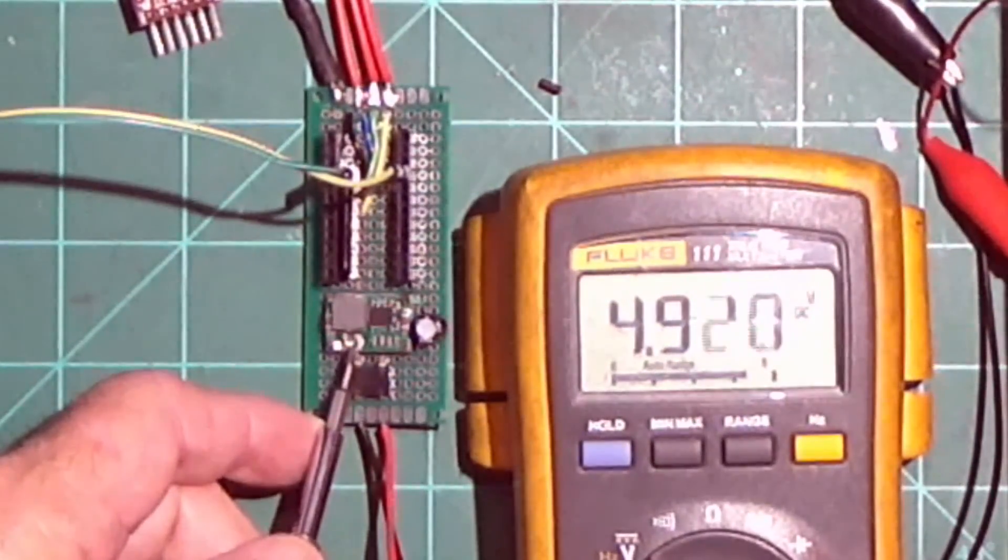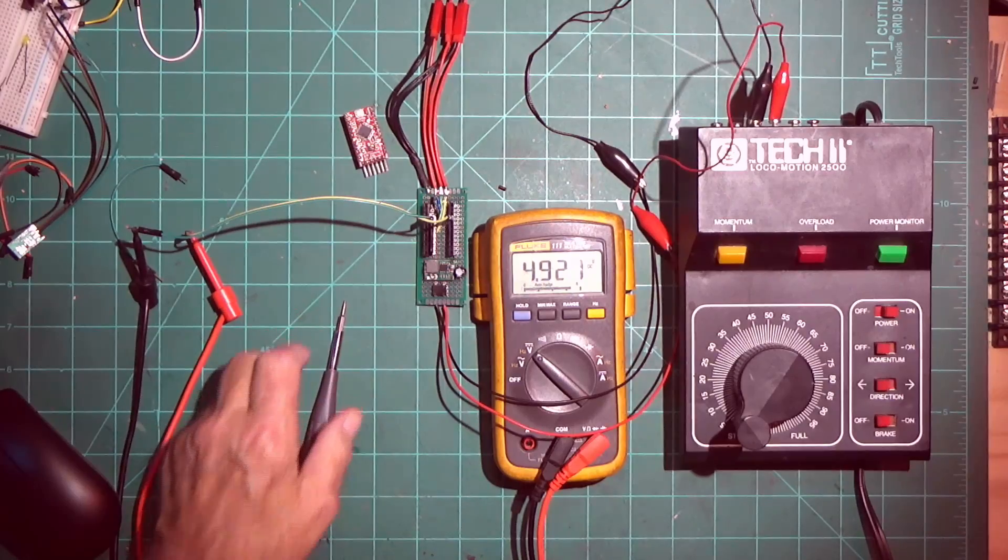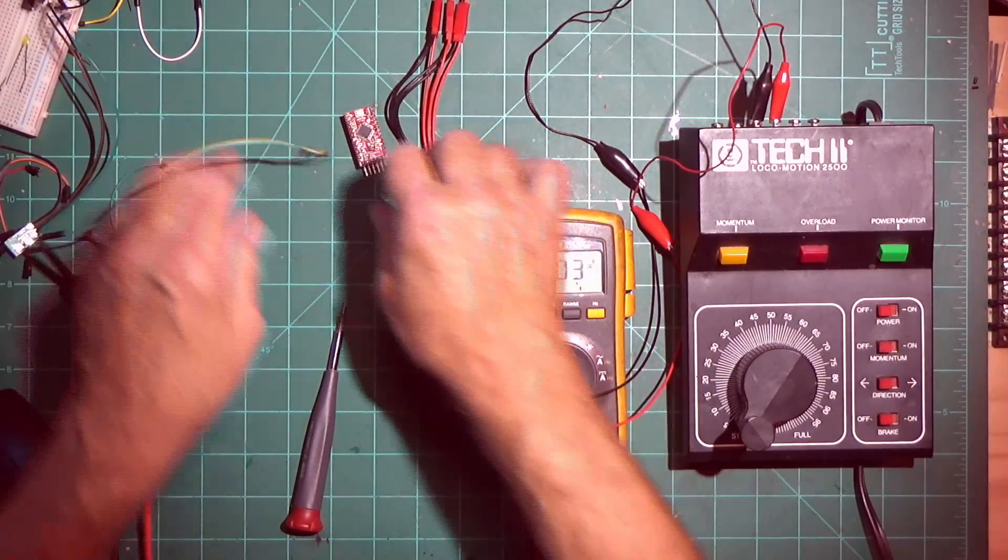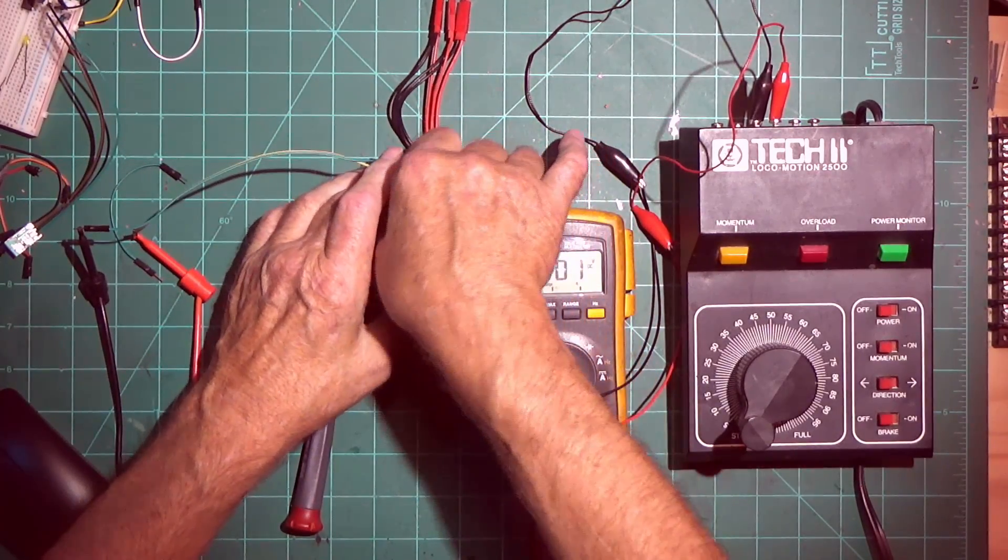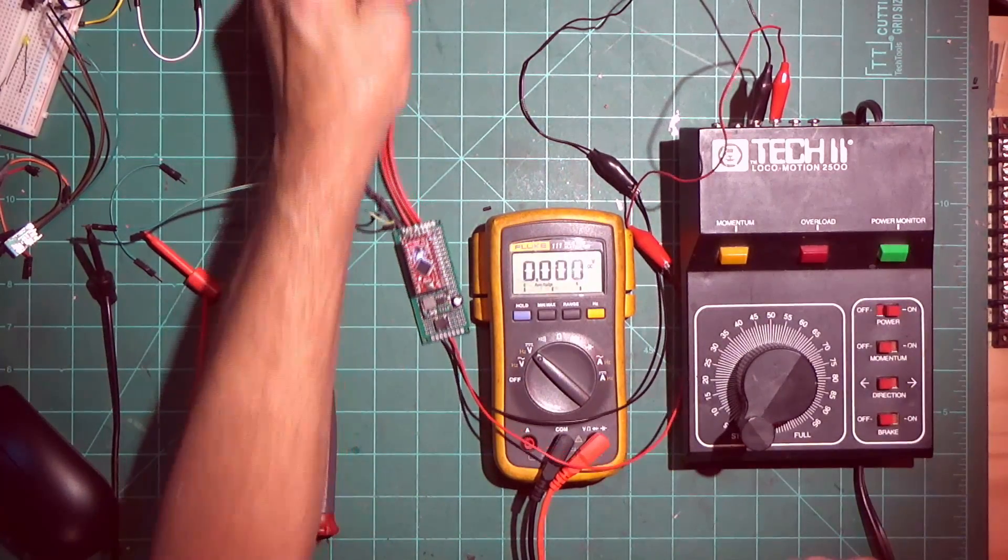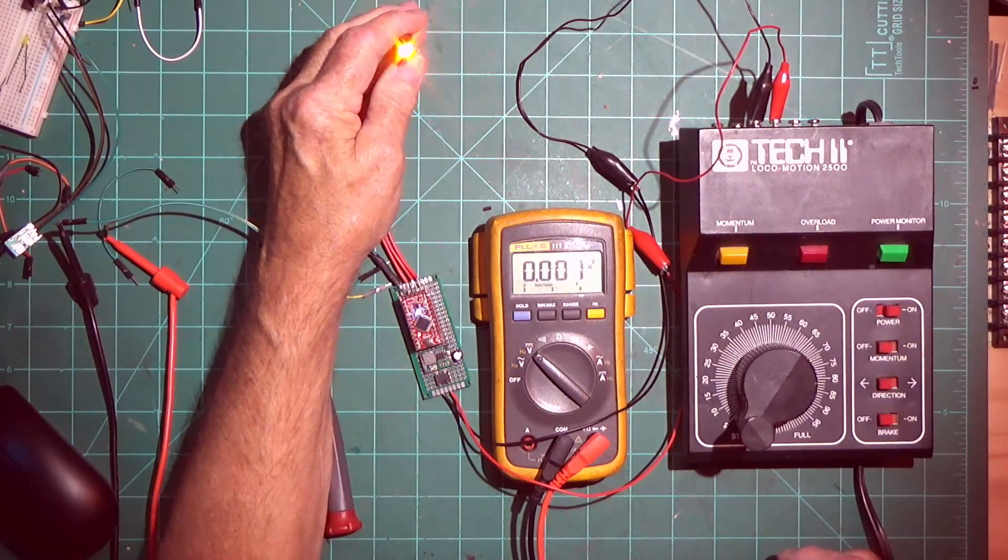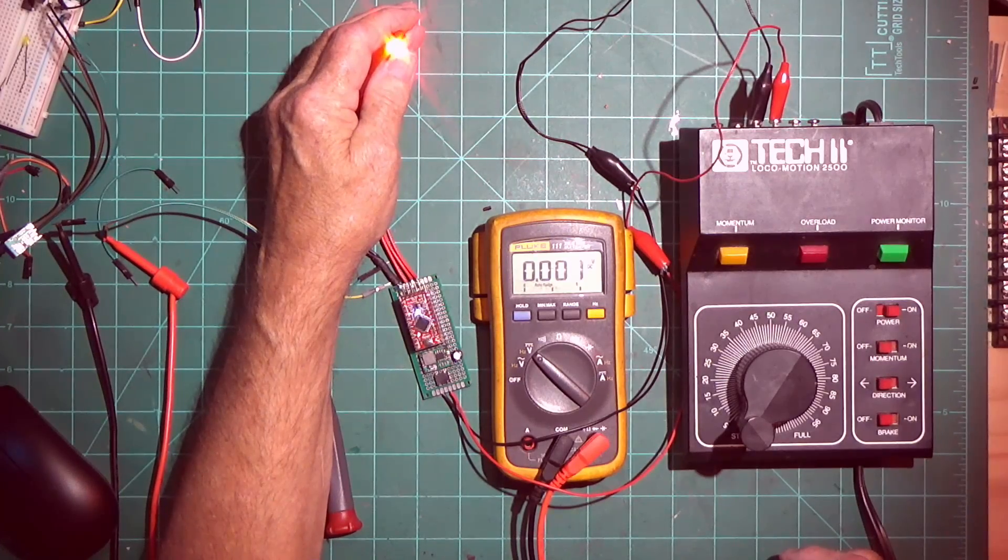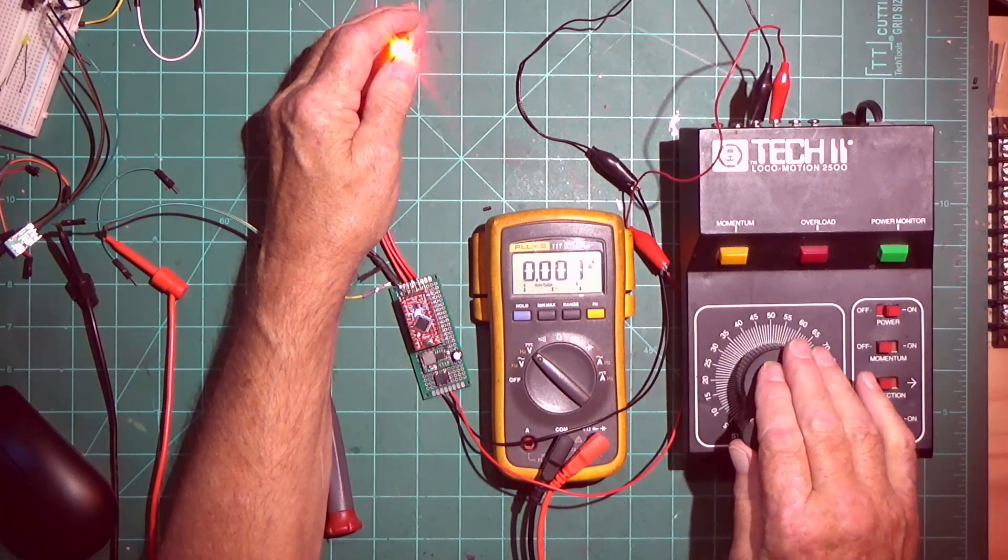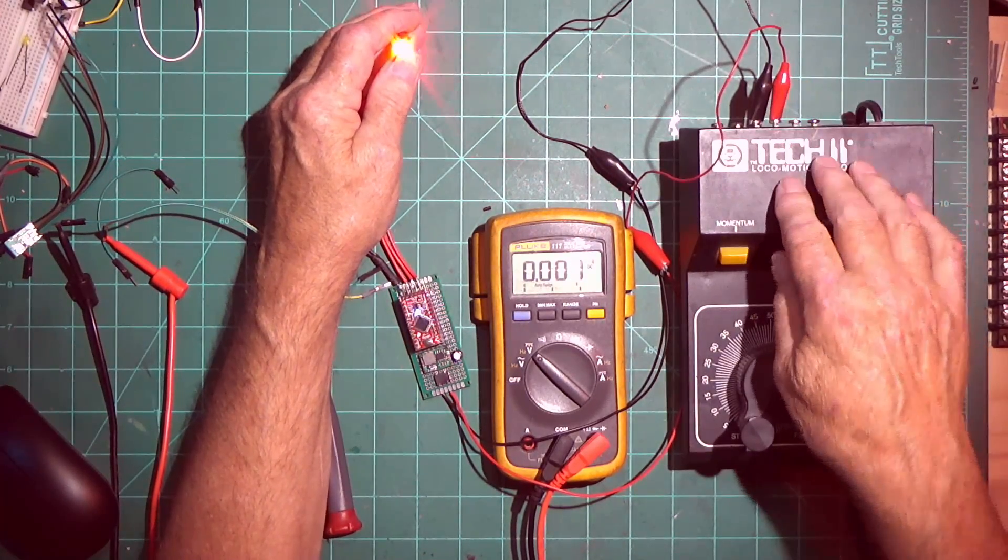I'm going to shut this off, take this meter off, put the Pro Mini in the socket, and then turn the power back on. You can see there is the campfire sketch running. This is with the AC terminals on a DC transformer.